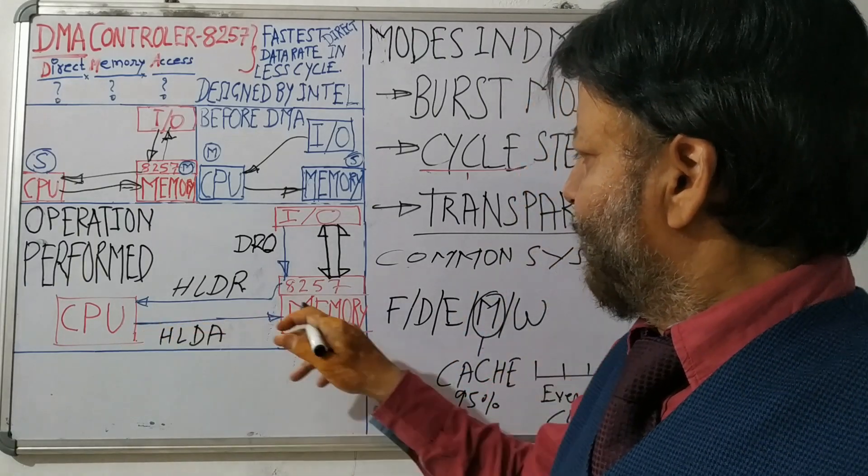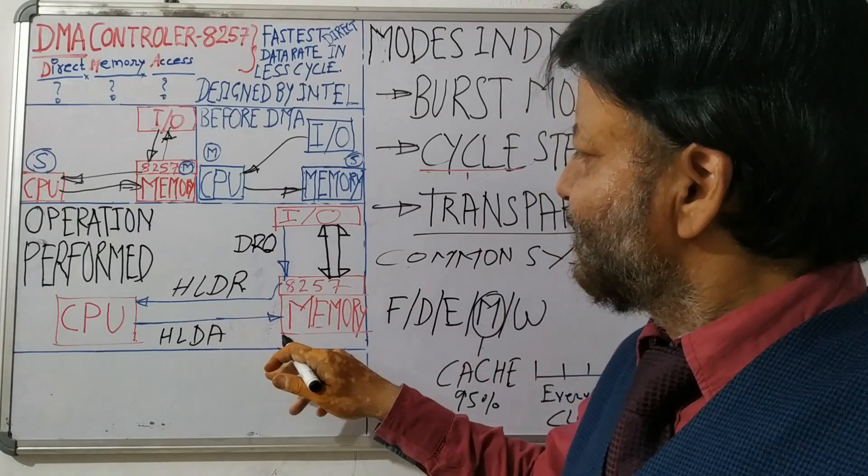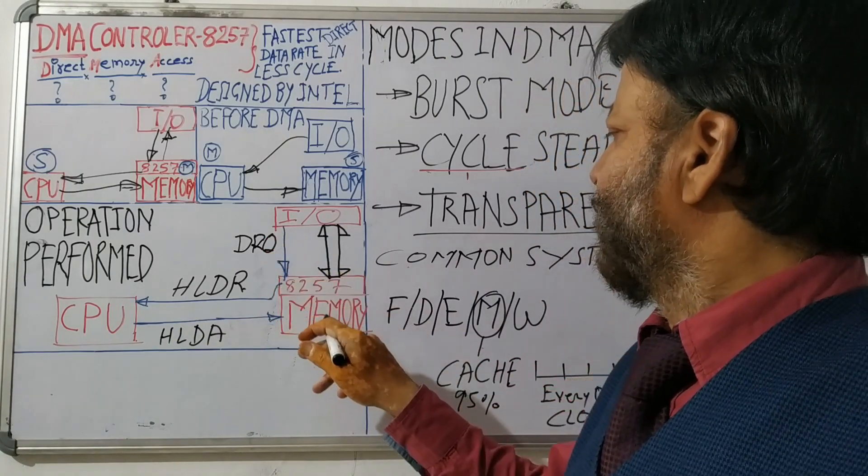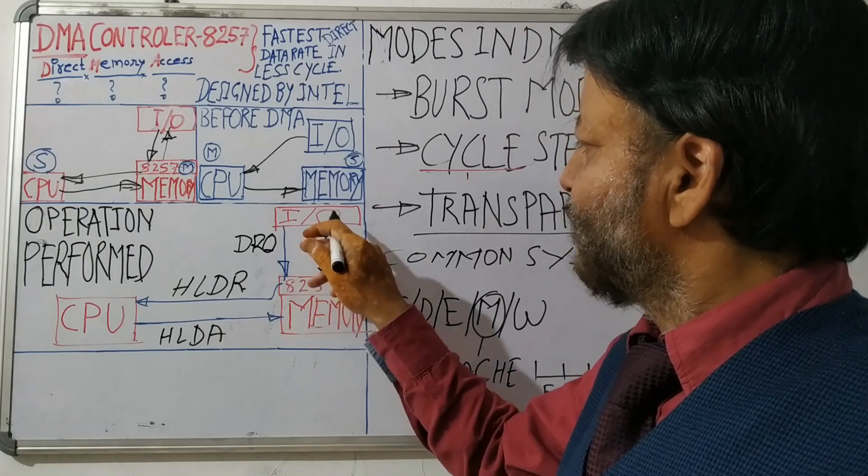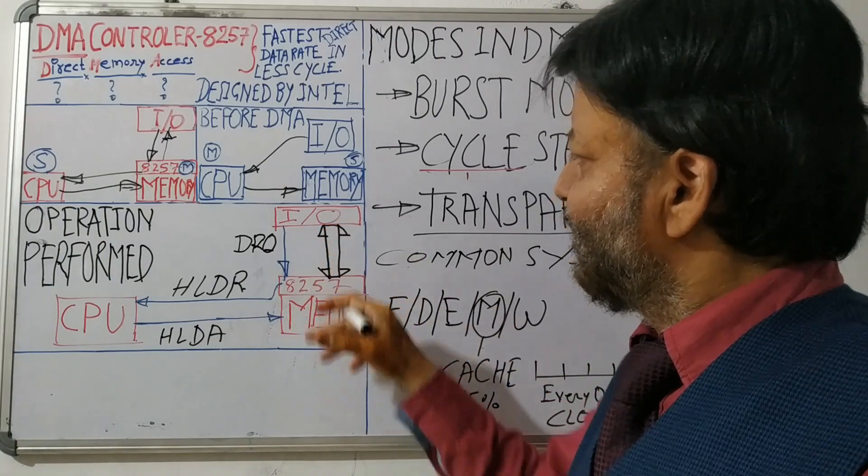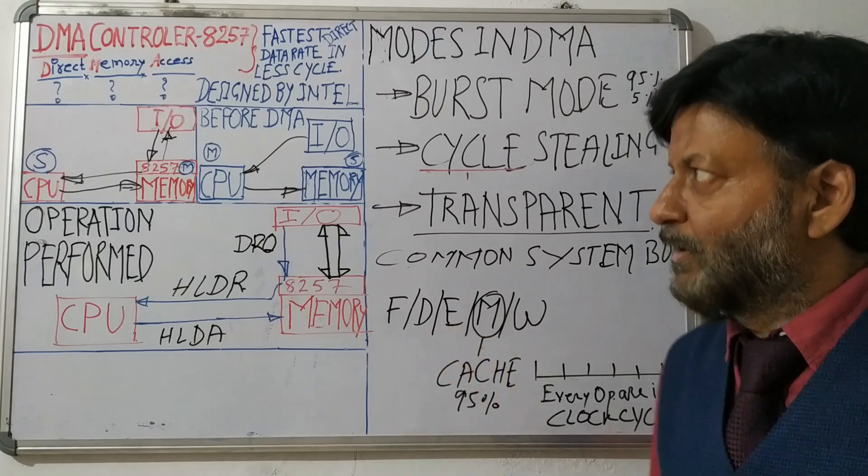Now CPU has released the bus and direct memory access is using that bus to transfer the data between input output devices and memory. So this is the thing.